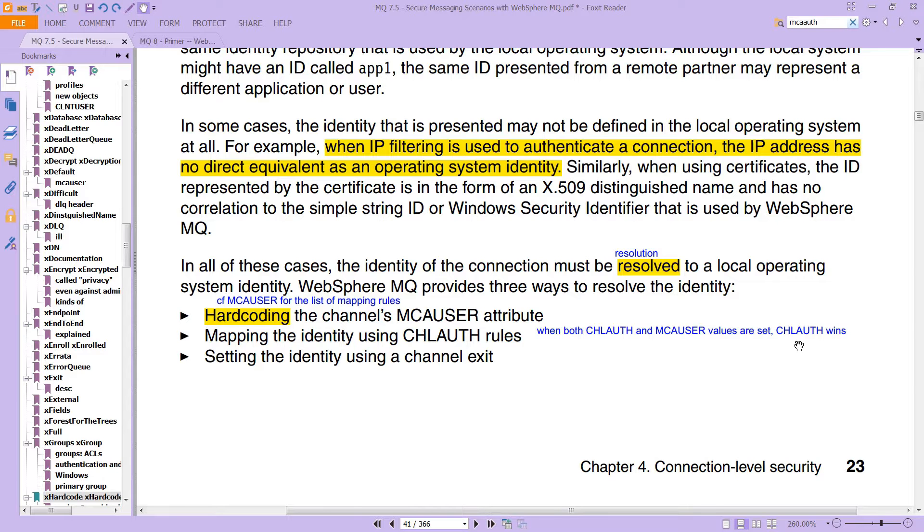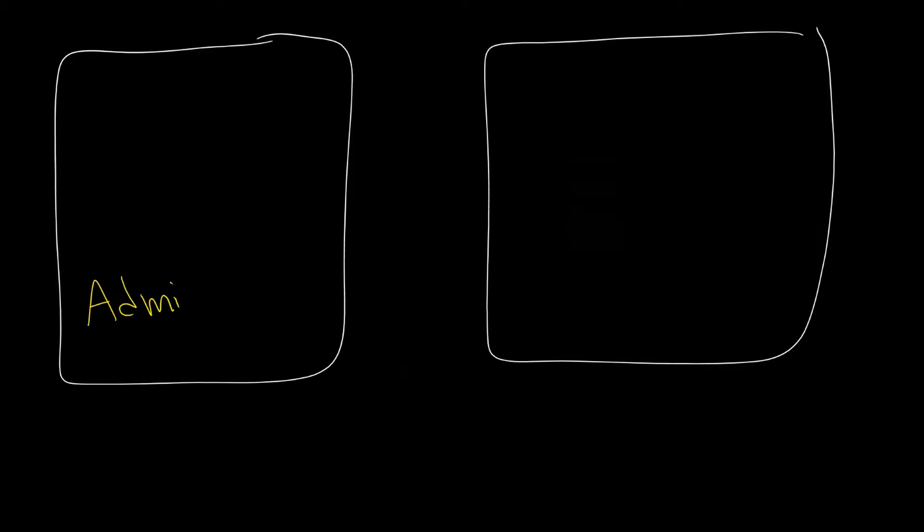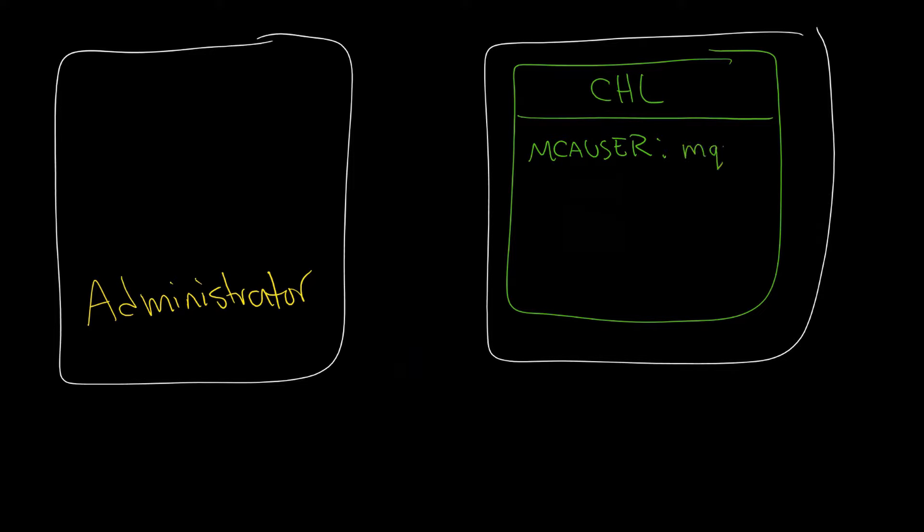In other words, if this is your client and this is your queue manager, and this is a Windows box so you're logged in as administrator for example, and then on your queue manager you have a channel that has an MCA user value hard coded as mqm, then this is going to be the value when the channel starts up.